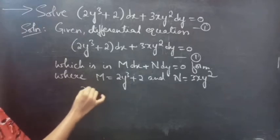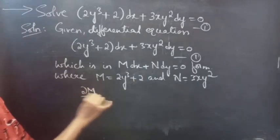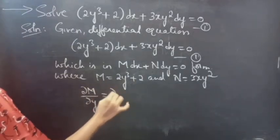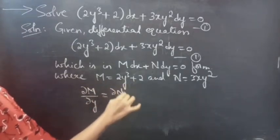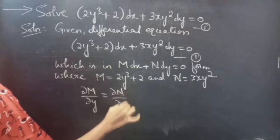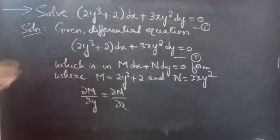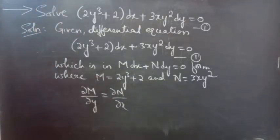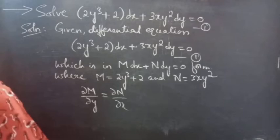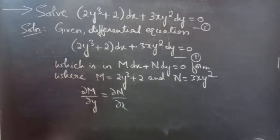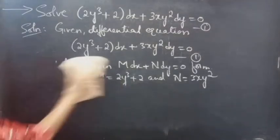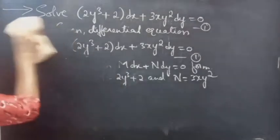If the partial derivative of M with respect to y is equal to the partial derivative of N with respect to x, then we can say that the given differential equation is an exact equation. So now let's find the partial derivatives of M with respect to y and N with respect to x.